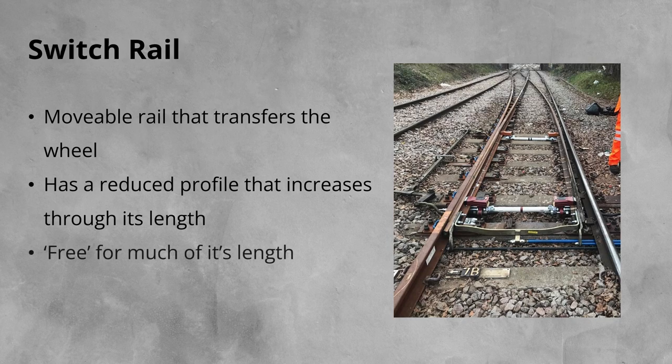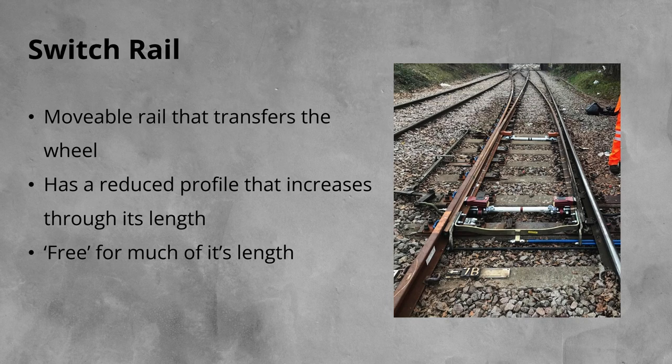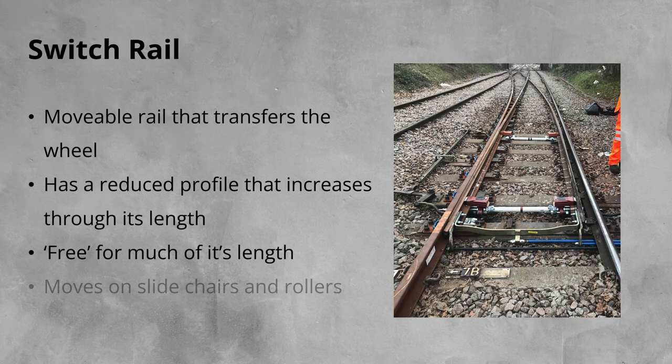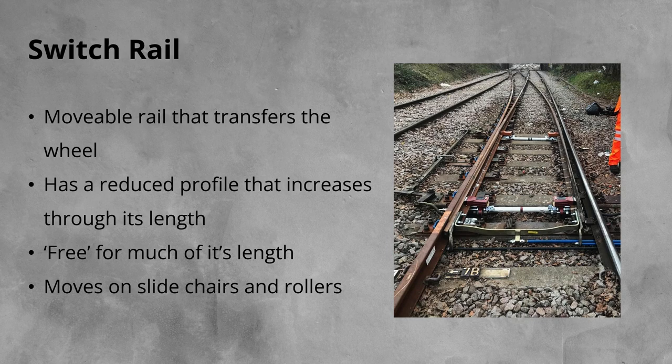For much of its length, the switch rail is free. It is not clipped down like normal rails and the stock rail. It sits on special base plates that either have lubricated sliding surfaces, slide chairs, or rollers to facilitate its smooth movement between positions. Because of this free movement, switch blades can become damaged easily if the sleepers underneath are voiding.